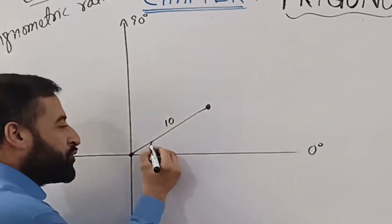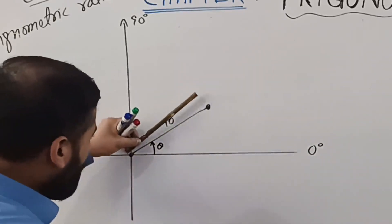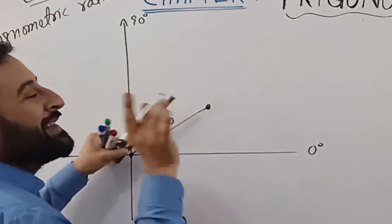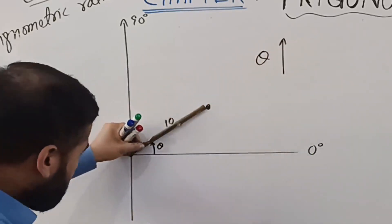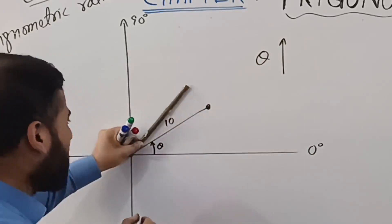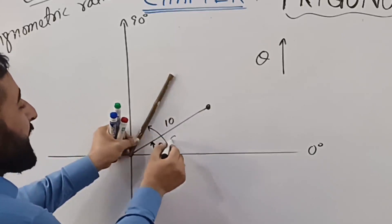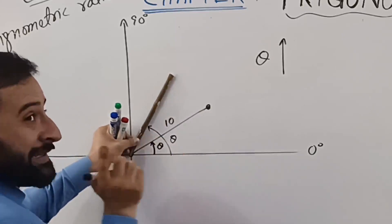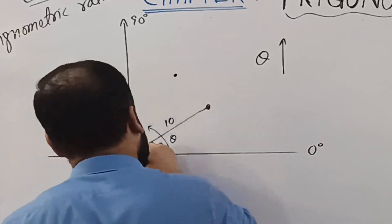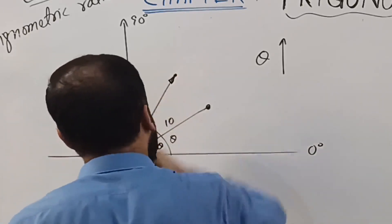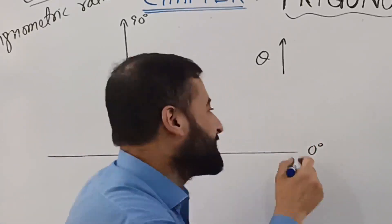Now if you increase the angle — if you take the stick a bit upward — nothing happens to its length. No change in its length. But the perpendicular increases. At this particular position, for example, the perpendicular length is 5, whatever.